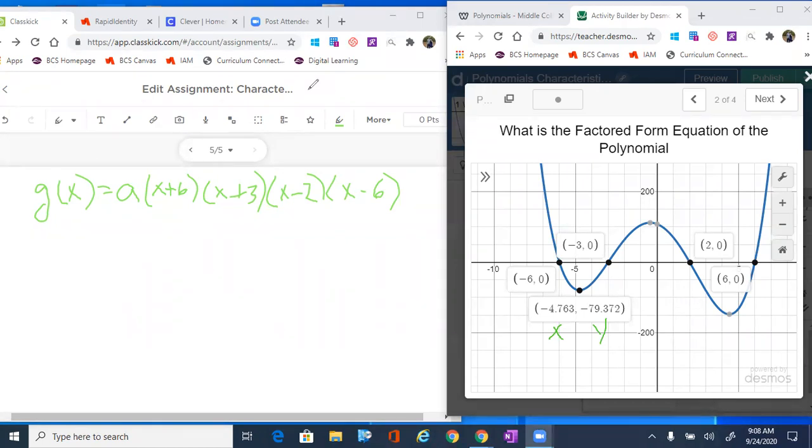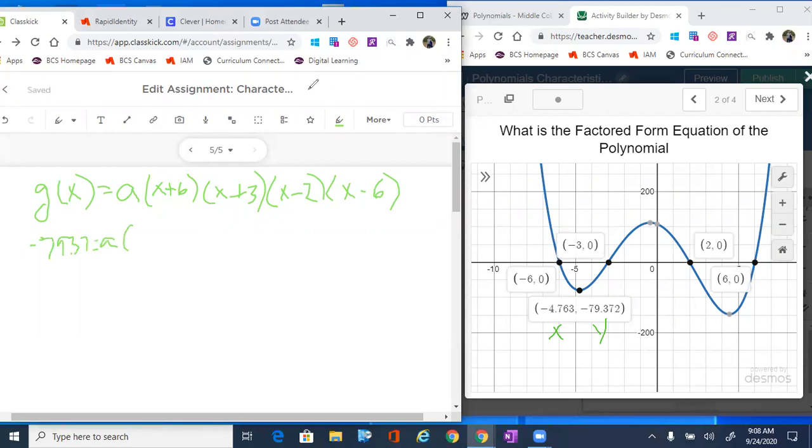Let's do that real quick. g(x) gets negative 79.37 equals a, and then I'm going to plug in that negative 4.76 into everything that's an x: negative 4.76 plus six, negative 4.76 plus three, negative 4.76 minus two.